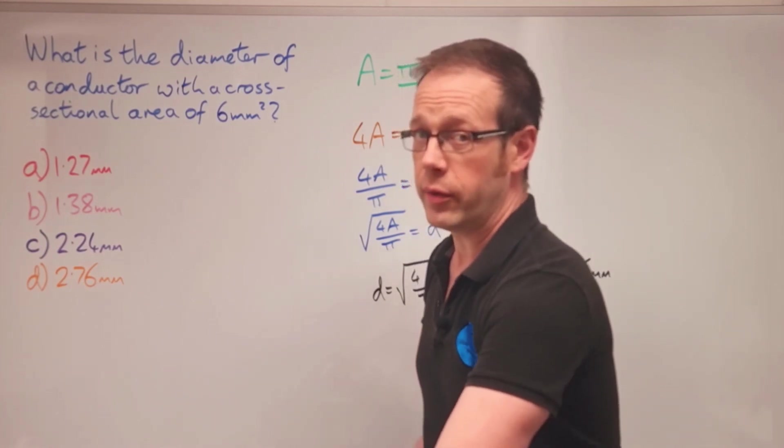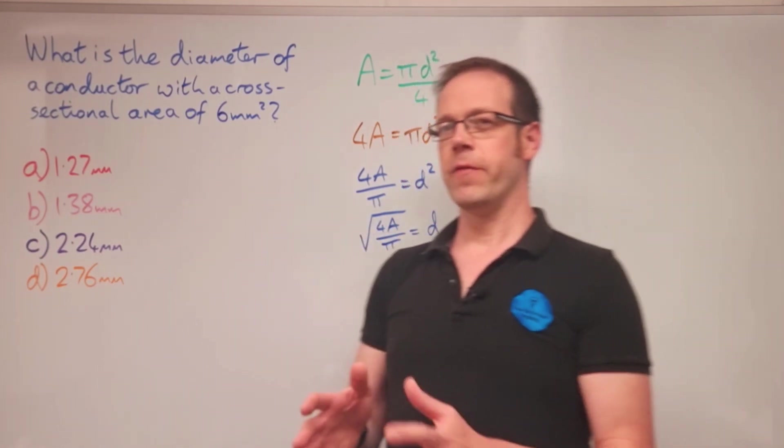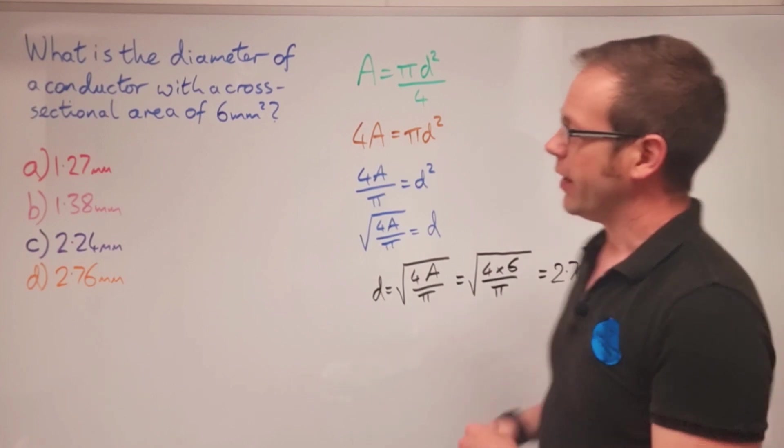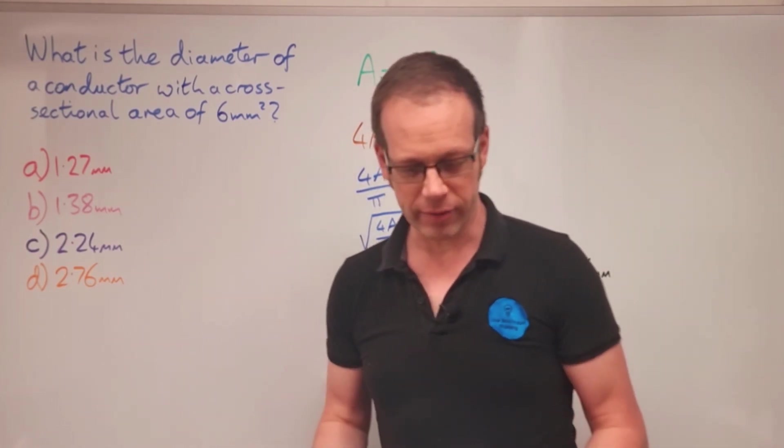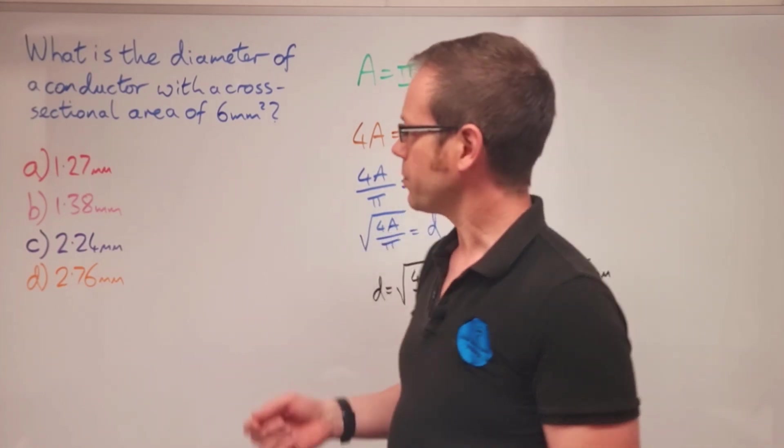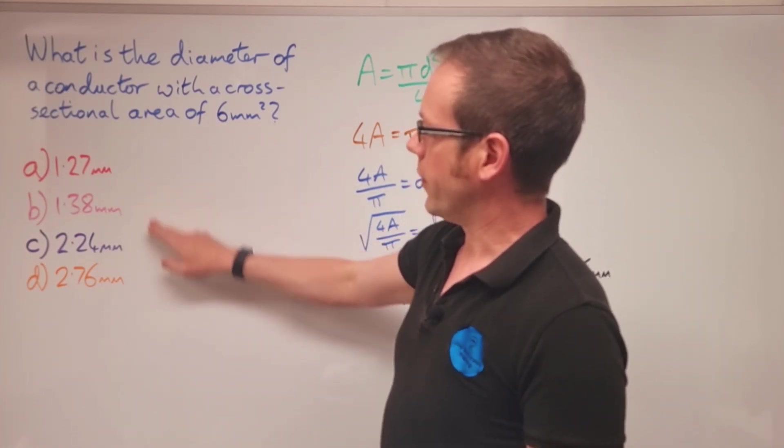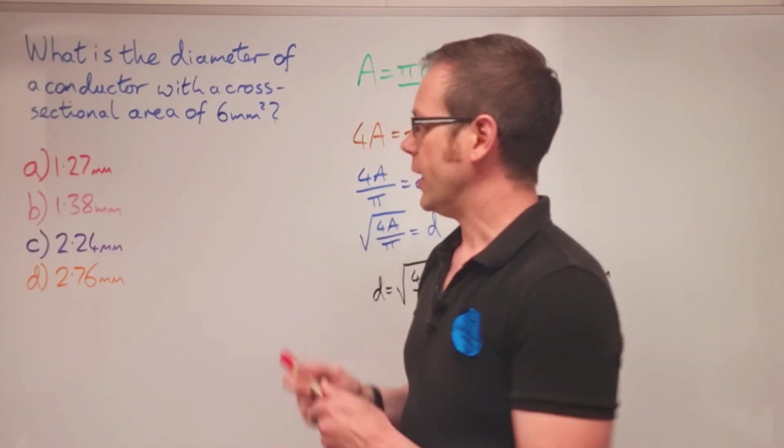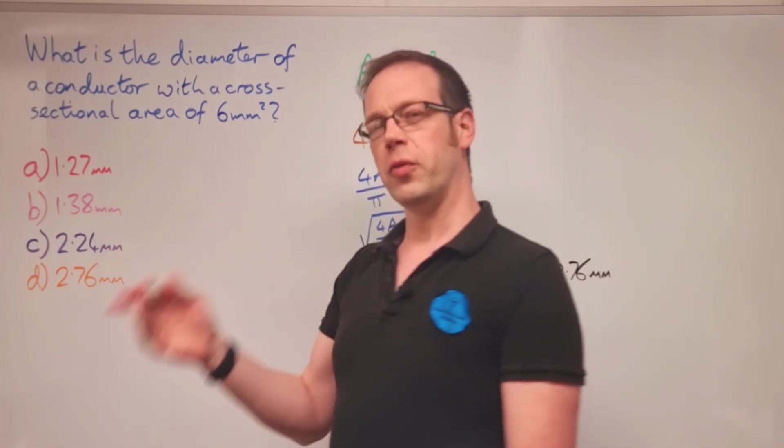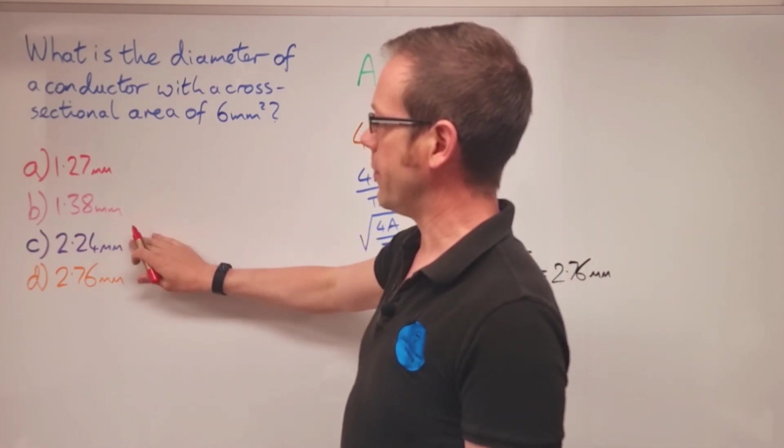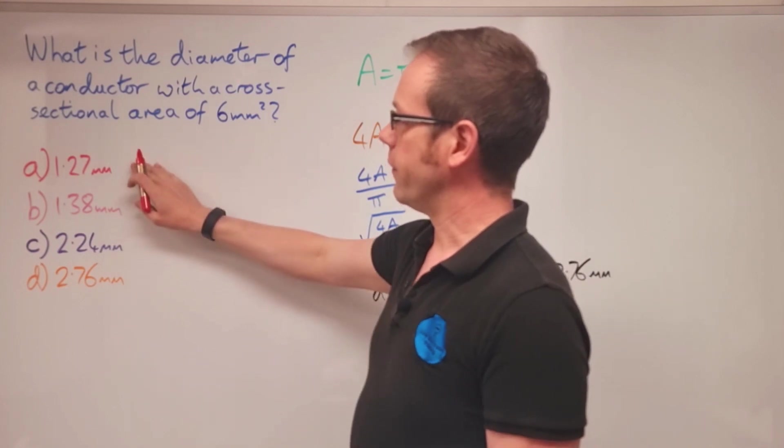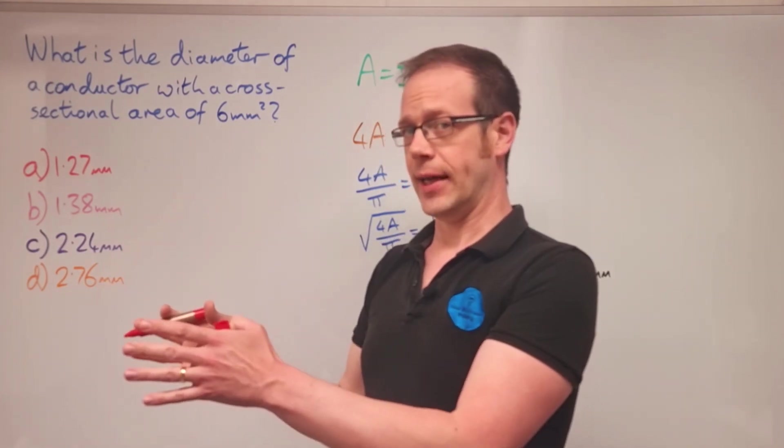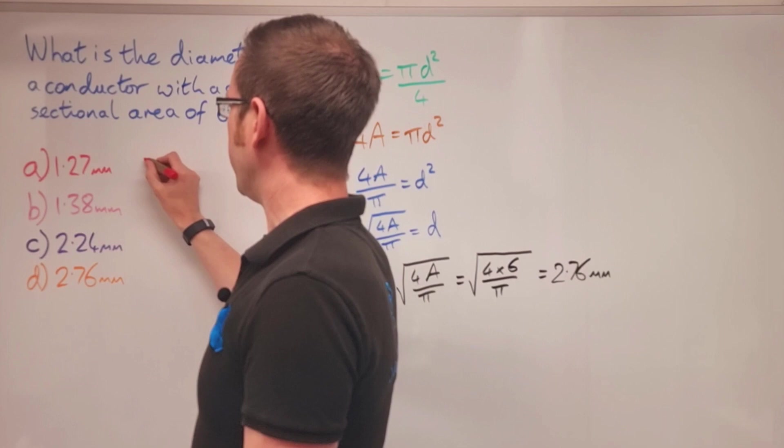That's one way we can do it with transposition. If you're not incredibly confident with transposition and you're looking at that and going 'I'm not sure how we got from there to there,' there is a different way of doing it that you might be more comfortable with. We know the area and we're trying to find the diameter. We could do this via a brute force method. We could figure out for each diameter we've been given as possible answers what the area would be, and that'll get us to the right answer.